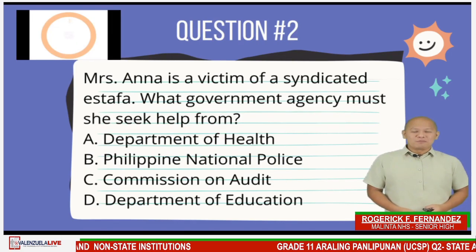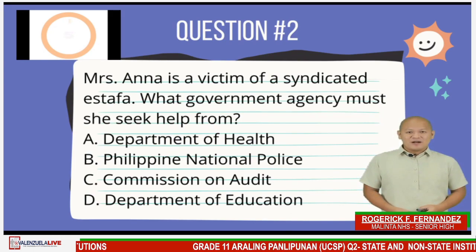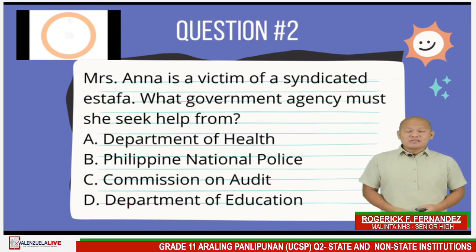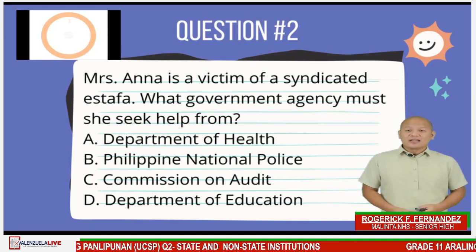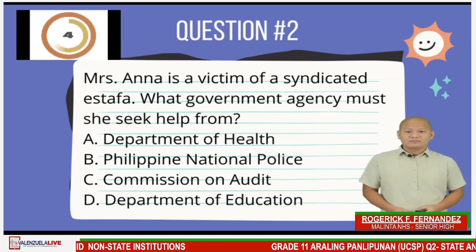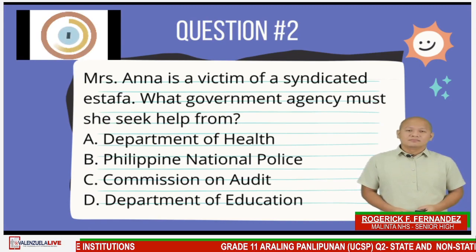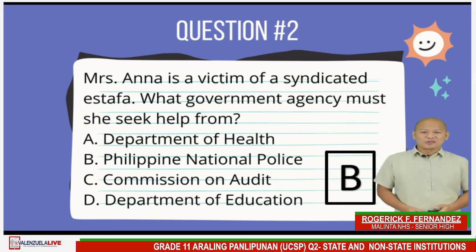Question number two: Mrs. Ana is a victim of a syndicated estafa. What government agency must she seek help from? Letter A, Department of Health. Letter B, Philippine National Police. Letter C, Commission on Audit. Letter D, Department of Education. The answer is Letter B.